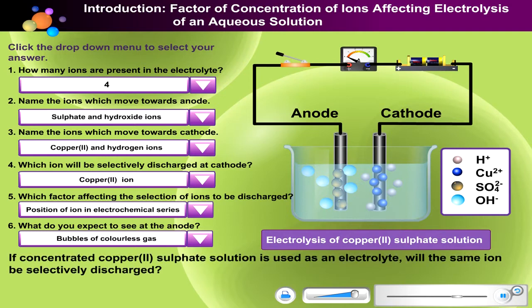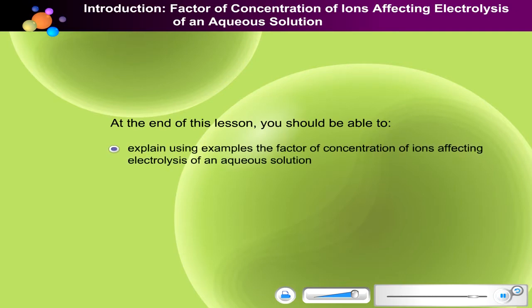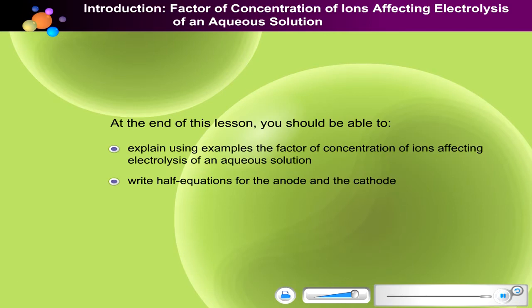If concentrated copper 2 sulfate solution is used as an electrolyte, will the same ion be selectively discharged? What do you think? At the end of this lesson, you should be able to explain, using examples, the factor of concentration of ions affecting electrolysis of an aqueous solution, and write half equations for the anode and the cathode.